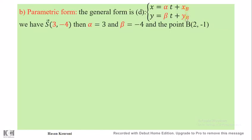Alpha and beta are the coordinates of a direction vector, and we are given that: S(3, -4). So α = 3 and β = -4.